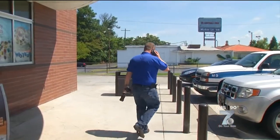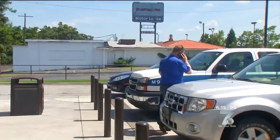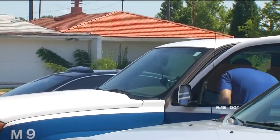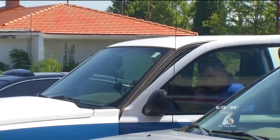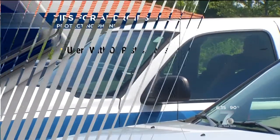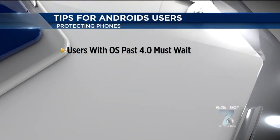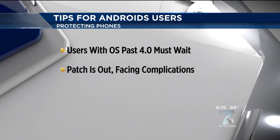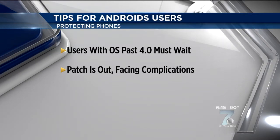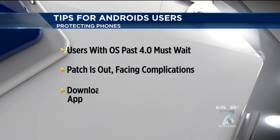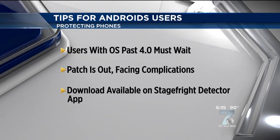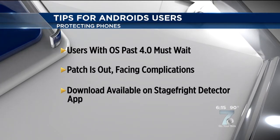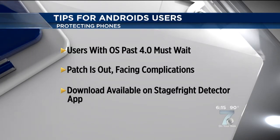Bradley's glad to have the information. With 950 million Android phones vulnerable, he wants to make sure his mobile is not one of them. Android users with an operating system older than 4.0 will have to wait for updates. There is a patch already out, but there are so many different types of Androids that, unlike Apple's iPhone, it's not as simple as rolling out one update all at once. If you want to figure out if your phone is vulnerable, you can download the Stage Fright Detector app, which is linked to this story on WSPA.com.